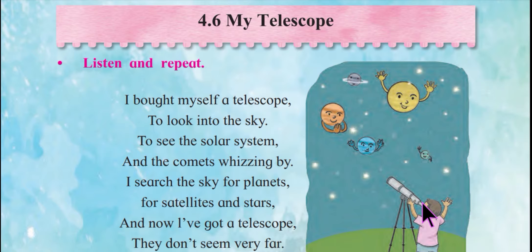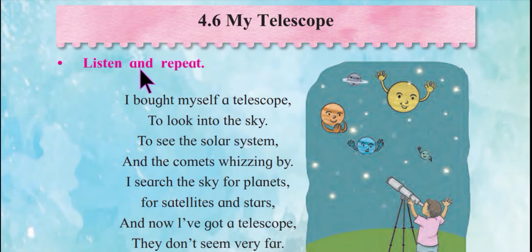In Hindi, a telescope is called a 'naali ki aakar ka yantra' — a tube-shaped instrument used to see distant things up close. That is what a telescope means. Okay, I hope you understand. Now, listen and repeat.